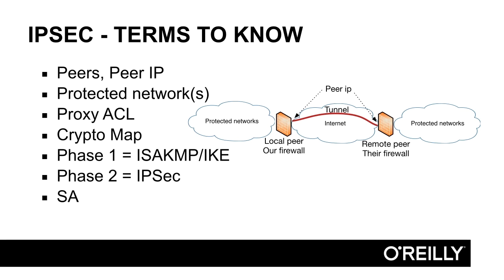The final term to know is SA — an acronym that stands for Security Association. In each firewall, when the tunnel is up and running, it is shown with show commands as a security association. So a security association is a tunnel that is set up, and we will see how it looks later in the course when we look at the show commands.